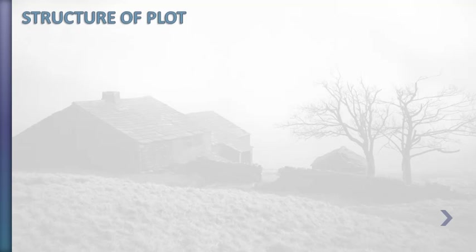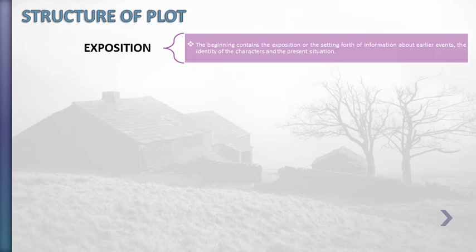Now we will define each phase with an example. Firstly, what is an exposition? The beginning contains the exposition, or the setting forth of information about earlier events, the identity of the characters, and the present situation. For example, let's presume that the exposition or the beginning will be a crime scene. We have the victim, murderer, and a witness. We can suppose that the murderer is masked. However, after having a small struggle with the witness, the witness can uncover his mask and see his face.